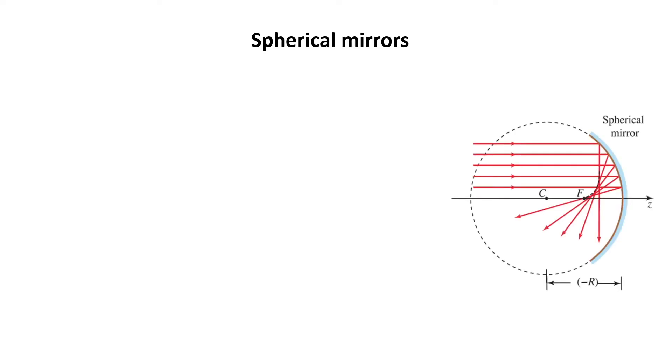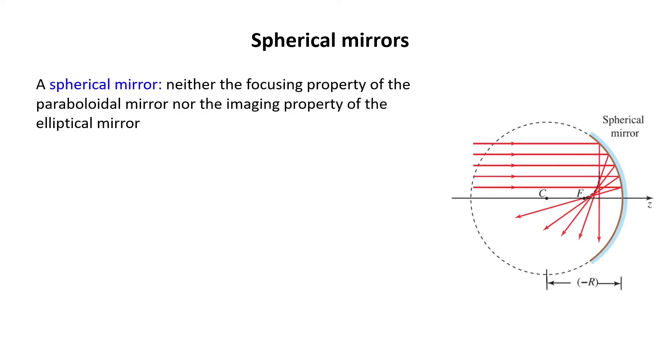The next type is spherical mirror. It has neither the focusing property of the paraboloidal mirror nor the imaging property of the elliptical mirror, but why?